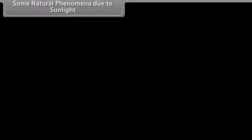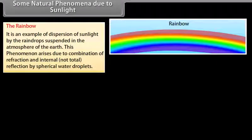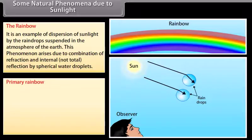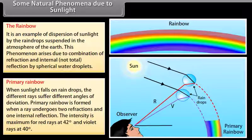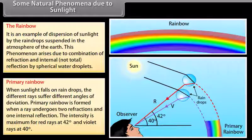Natural phenomena due to sunlight — the rainbow. The rainbow is an example of dispersion of sunlight by raindrops suspended in the atmosphere. It arises due to a combination of refraction and internal reflection by spherical water droplets. The primary rainbow is formed when a ray undergoes two refractions and one internal reflection. The intensity is maximum for red rays at 42° and violet rays at 40°.